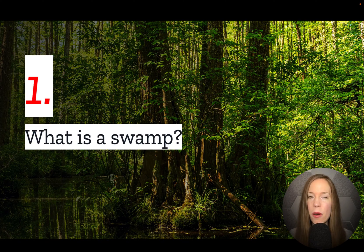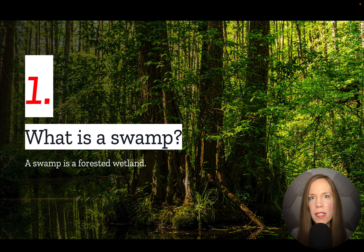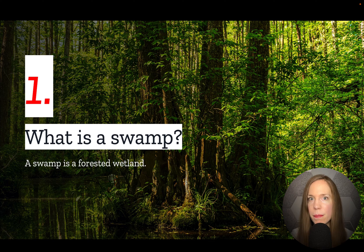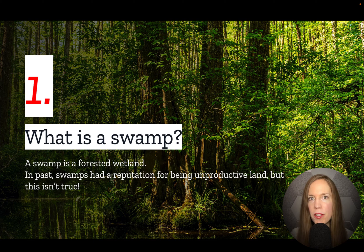Number one: what is a swamp? A swamp is a type of forested wetland that stays wet for long periods of time and typically has deeper pockets of water than other wetlands. In the past, swamps had a reputation for being some of the most unproductive, unwanted land in the U.S. But, as we shall see, this reputation was unwarranted.